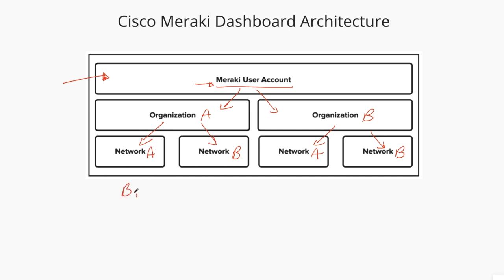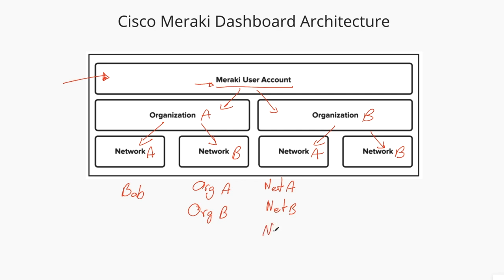So let's say that Bob has a user account. With that, Bob has org A and org B. In org A, you have network A, and in org B you have network B and network C — let's also put network C and network D. So in org A you have just network A, and org B you have network B and network C. That's everything that Bob can see.